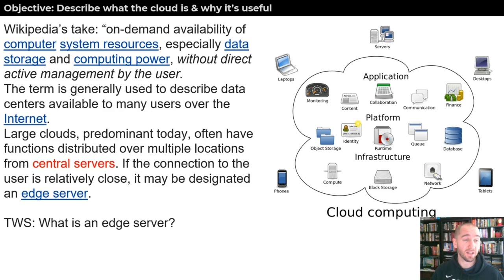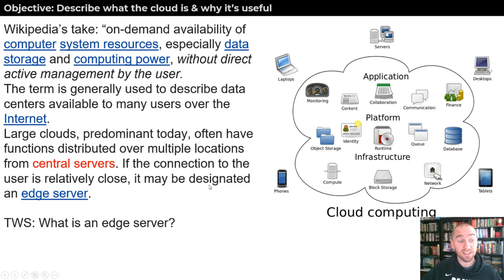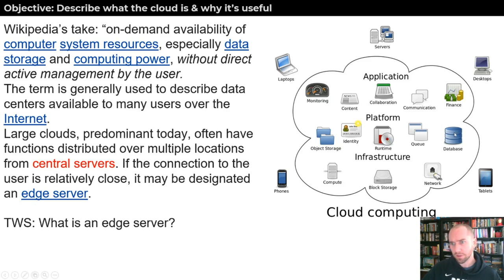Here's Wikipedia's take on the cloud: on-demand availability of computer system resources, especially data storage and computing power, without direct active management by the user. Large clouds are predominant today. They often have functions distributed over multiple locations from central servers. If the connection to the user is relatively close, it may be designated as an edge server. Just because one server may be closer to you doesn't necessarily mean that's the one you're using to get whatever content or database access you need.